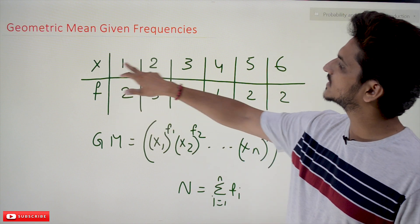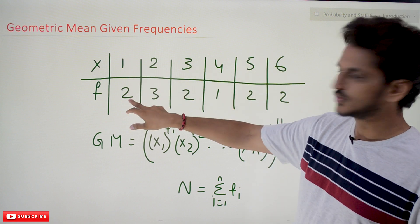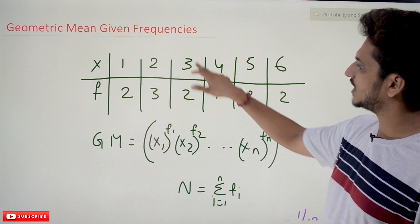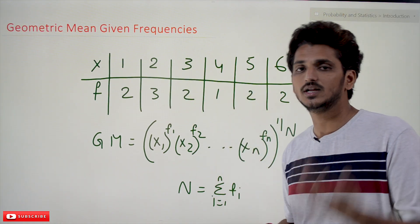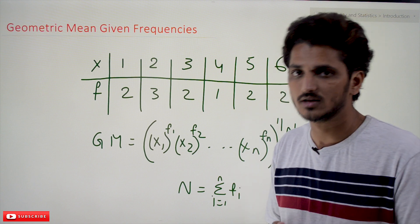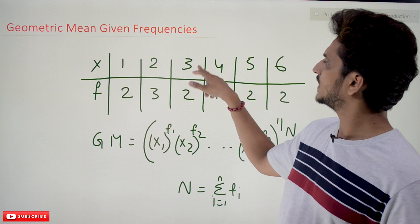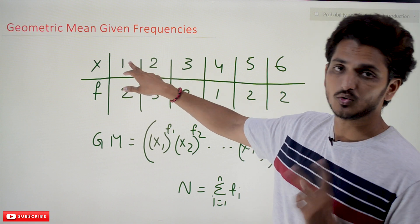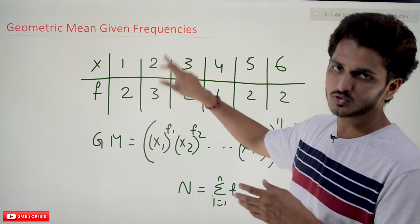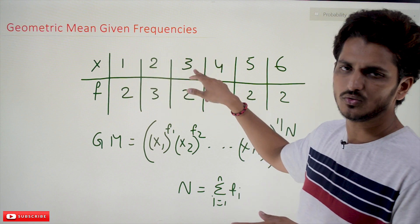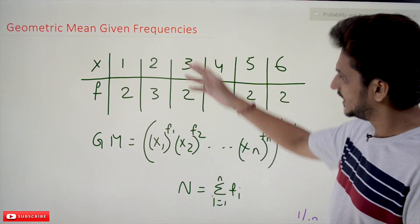Coming to today's class: how we calculate the geometric mean given frequencies. This is the frequency distribution — X: 1, 2, 3, 4, 5, 6. Some values are given: 1 occurs 2 times, 2 occurs 3 times, 3 occurs 2 times — that is what frequency means. So in geometric mean we multiply: 1 × 1 (since 1 occurs 2 times), then 2 × 2 × 2 (since 2 occurs 3 times), and so on.